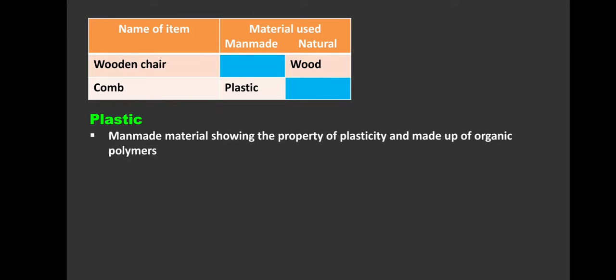What is plastic? It's a man-made material showing the property of plasticity and made of organic polymers. Polymers means multiple chains. You have seen so many different varieties of plastic: plastic bottles, stools, chairs, scales, and many different things. Some are linear while some are circular.